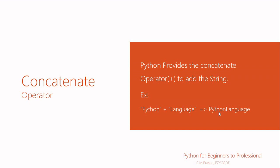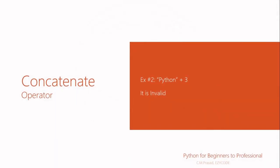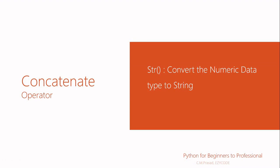In the second example, if we try to concatenate a string with a numeric value, it will create a problem because one is a string and the other is a numeric value. A numeric value can never be concatenated with a string unless we convert it. Python provides the str() function to convert a numeric value into a string value.